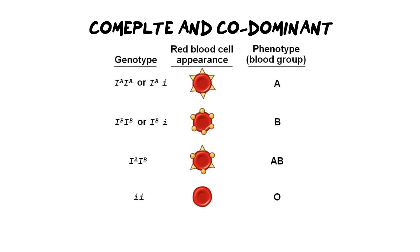Now let's get into the genetics that governs the complete dominance and co-dominance that we see in blood groups. The first thing I want to point out is what allele letters you need to use. The letter I's used here for the alleles are universal and they are the only letters you are allowed to use in an exam. Please do not use any other letters other than the capital letter I and the lowercase i with the superscript A or B on it. That is the only thing you're allowed to use in an exam and your examiner will expect you to use the correct notation.